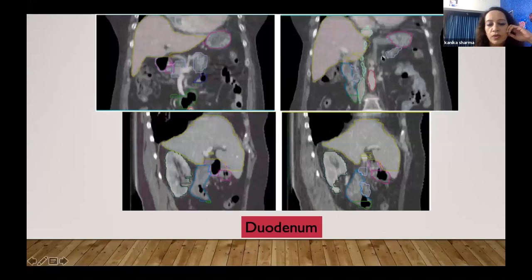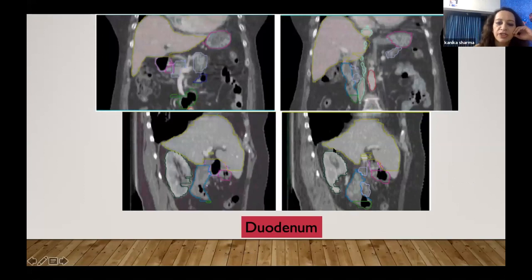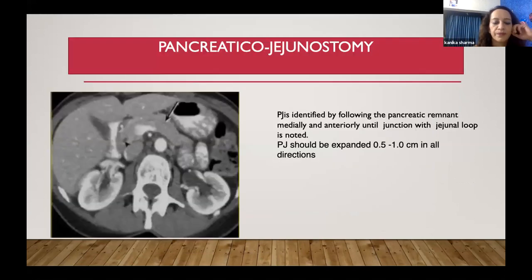Localize the duodenum in sagittal and coronal planes. If you see it in the beam's eye view, you will appreciate the C-shape. If you have drawn the stomach, it will be a continuous structure from the stomach shaping into something like a sigmoid.